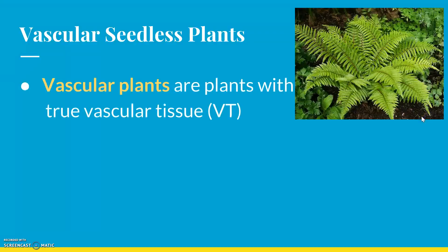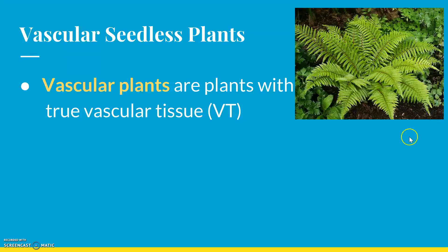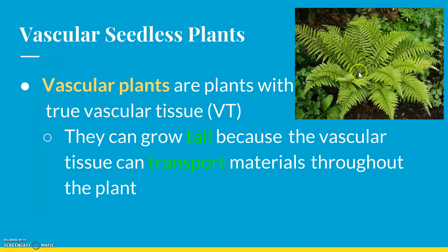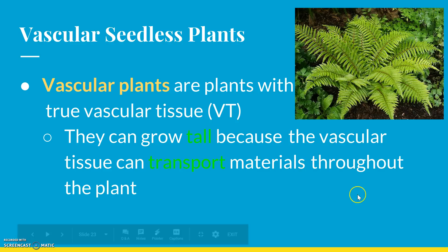Vascular plants are plants with vascular tissue — that makes perfect sense. These plants can grow a little bit taller because they have that vascular tissue to move stuff. You can see this fern here. You might see ferns in your house or out back. Some restaurants always have ferns because they're really pretty and super easy to take care of. They grow about a foot, foot and a half, maybe two feet tall. They have that tissue to transport stuff, but they don't have a whole lot of vascular tissue — it's going to allow water to move up and sugar to move down.